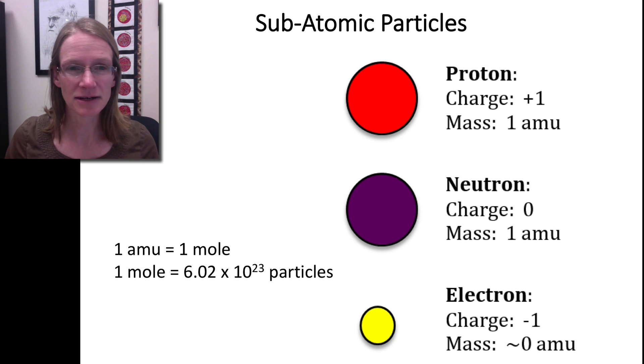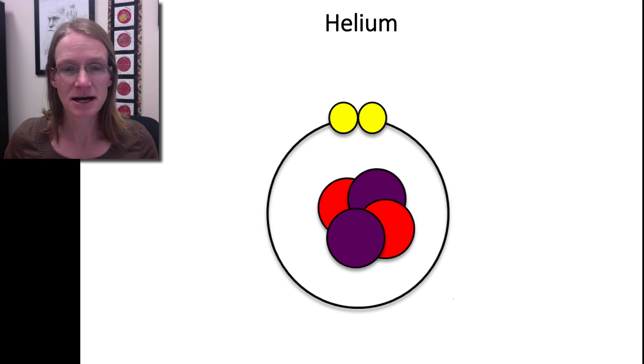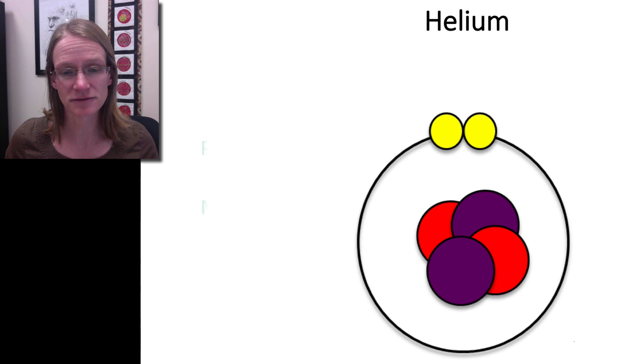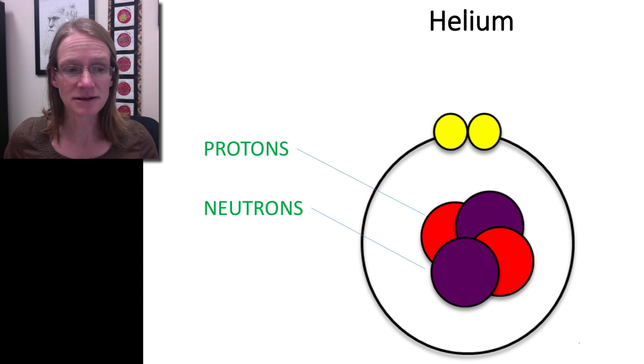If we look at the arrangement of these subatomic particles within an atom, we can see that in the nucleus are the protons and neutrons all collected together. Our current understanding is that electrons are floating around in these energy shells that surround the nucleus.